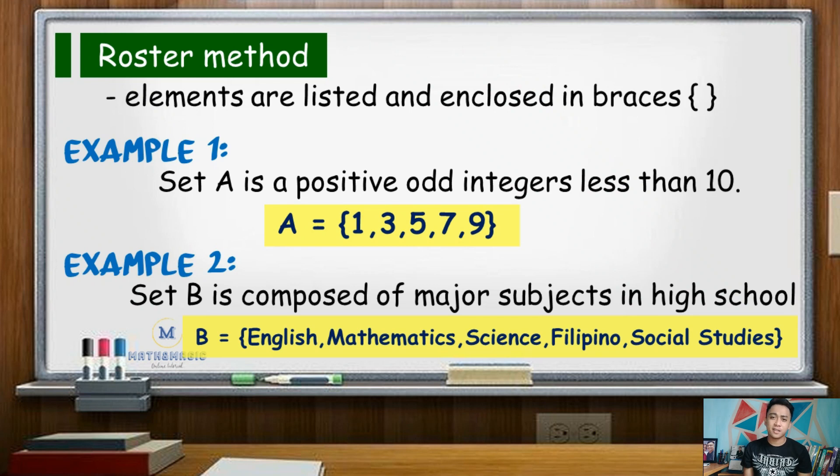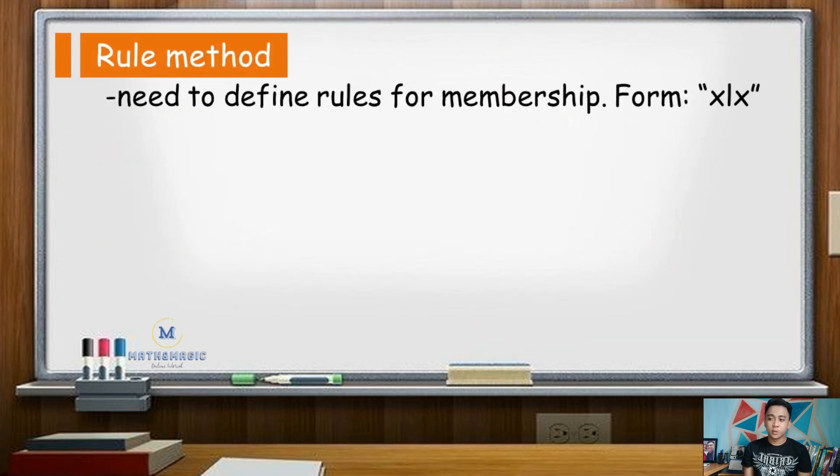On the other hand, for rule method, we need to define the rules for membership. So, we typically write this in a form set of all x such that x is blank.